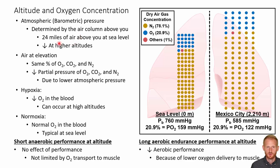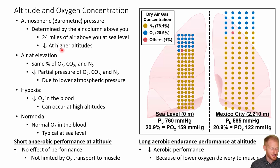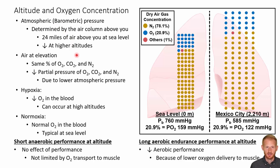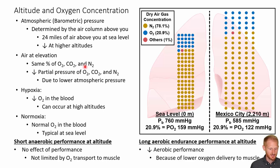At sea level, that's about 24 miles of air pushing down on you. At altitude, there's less air above your head because you're higher up and closer to outer space, so less than 24 miles, meaning you're going to have less atmospheric or barometric pressure. Now, when you are at these elevated locations, the percentage of oxygen, carbon dioxide, or nitrogen does not change compared to what it was at sea level. Oxygen is always going to be around 20.9% of the atmosphere no matter where you are.